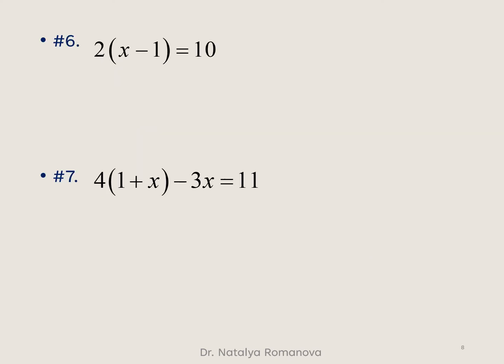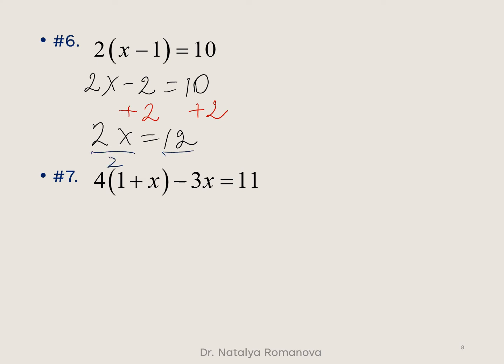For the next example, the first step is to distribute 2, giving 2x minus 2 equals 10. We must isolate x, so we add 2 to both sides, giving 2x equals 12. Then we divide both sides by 2, giving x equals 6. The answer for this example is 6.